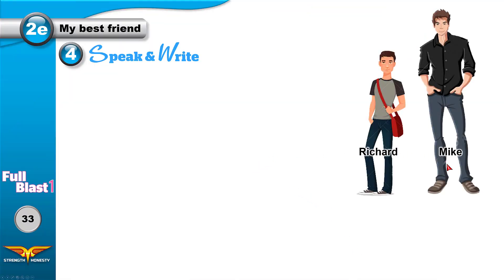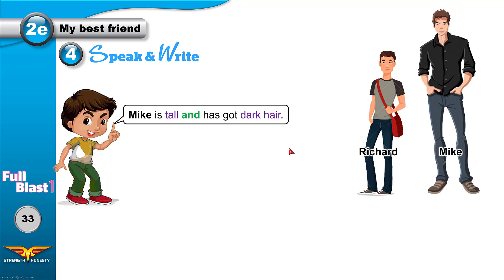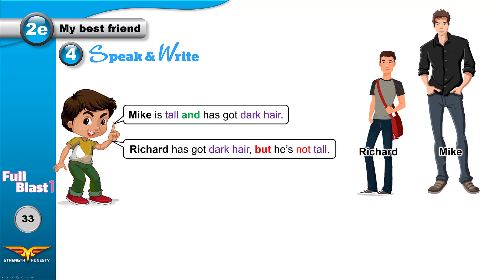Look at Richard and Mike. Mike is tall and has got dark hair. Richard has got dark hair, but he's not tall. We use 'and' to join similar ideas — tall and dark hair. We use 'but' for opposite or different ideas. Every time you use 'but,' that means you have opposite ideas; 'and' means similar ideas.